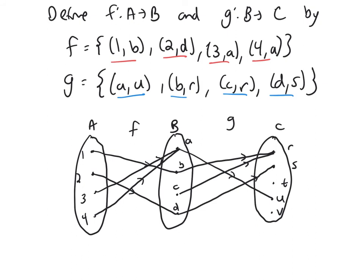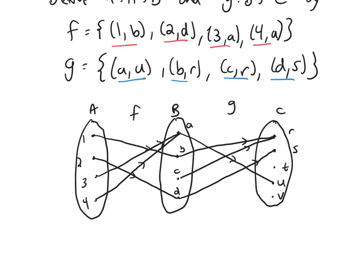So now when you're looking for the composition, in this case we're looking at G compose F. This function, you're going to start over on the left with an element out of A. And then you're going to see where it ends up if you follow all the way through to C. So if you start at 1, 1 goes to B, but then B goes to R. So you get 1 going to R.